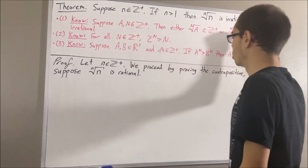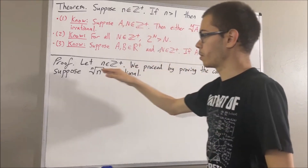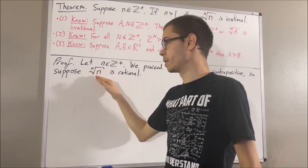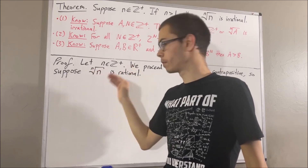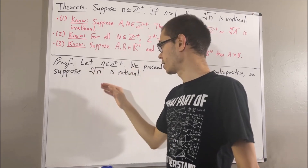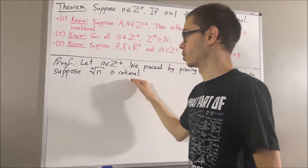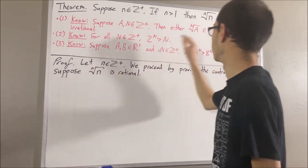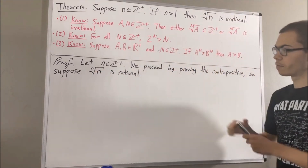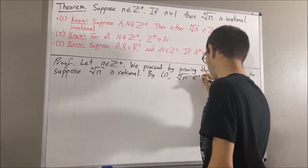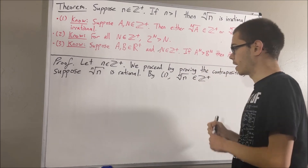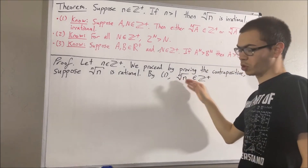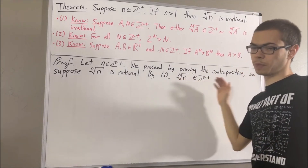By fact number one, we know that either the n-th root of n is a positive integer or the n-th root of n is irrational. Now in this case, the n-th root of n is rational, so we must have the n-th root of n is a positive integer. And we'll say that the n-th root of n is equal to the positive integer p.